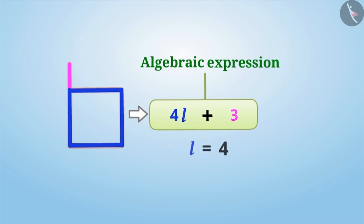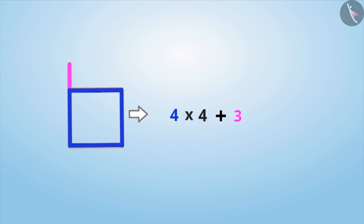But one point here is definite, that if the value of the variable is given, then the value of the algebraic expression can also be obtained. For example, if the measure L is 4 cm, then we can substitute this value in the algebraic expression and solve it. This will give us the length of the wire as 19 cm.